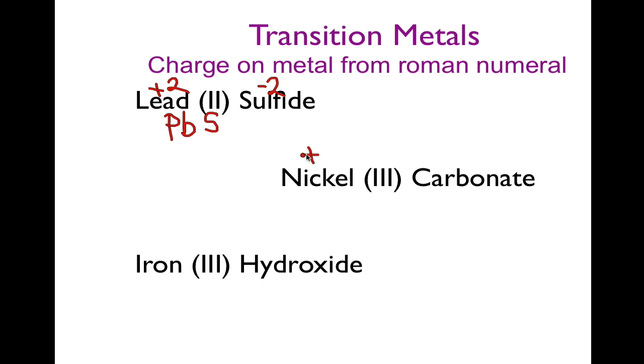Nickel is plus 3. Carbonate is minus 2. I looked that up on my chart. I know that nickel is plus 3 because it's Roman numeral 3, and now I'm going to put down that this is nickel, 2, that's Ni2, and this is carbonate, which is CO3, and I have to put parentheses around the carbonate because I know I'm going to have three carbonates in that ionic unit, and so it's Ni2(CO3)3.